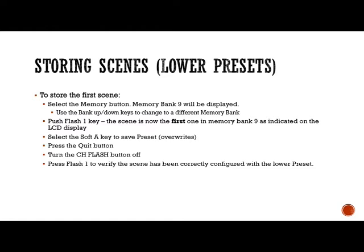A couple of keys will pop up. The soft A key is a preset that will overwrite anything in that memory location. Press the quit button to save, then turn the flash button off in the upper right corner. Press flash one to verify the scene has been correctly configured with the lower preset.